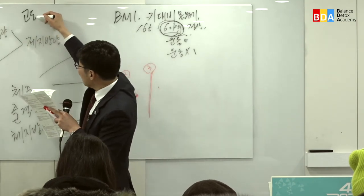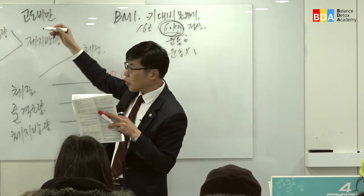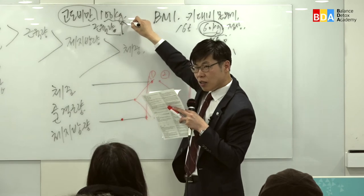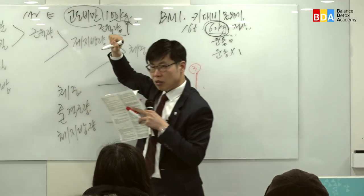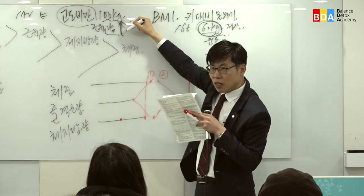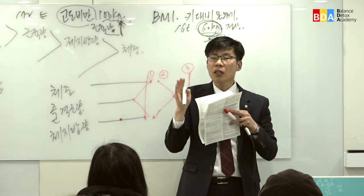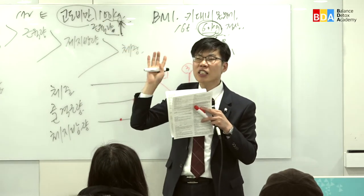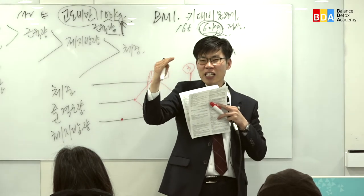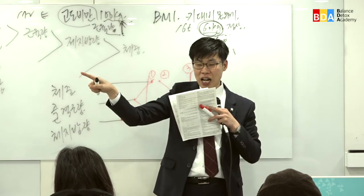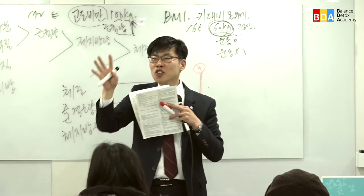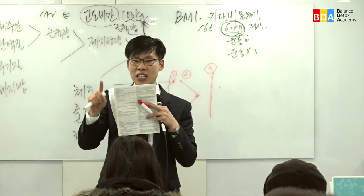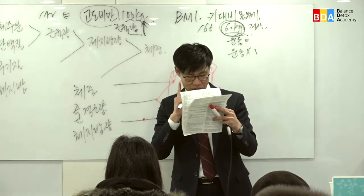어떤 사람이 고도비만으로 체중이 100kg인데 근육량이 많아서 100kg가 됐다고 해도 건강하다고 하면 안 됩니다. 몸무게가 많이 나오면 근육량도 많이 나올 수밖에 없지만, 이 근육은 질이 나쁜 근육입니다. 근육 사이사이에 끼어있는 지방을 측정기가 근육으로 인지하기 때문입니다. 다이어트 프로그램으로 근육량이 빠졌다면, 진짜 근육이 빠진 게 아니라 근육 사이사이에 있는 지방이 빠져나간 것입니다.